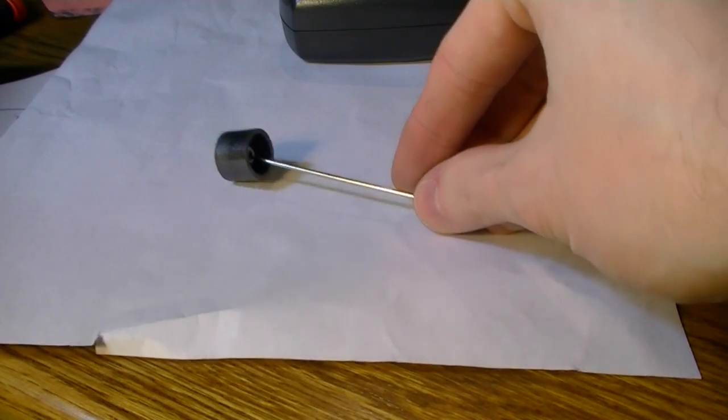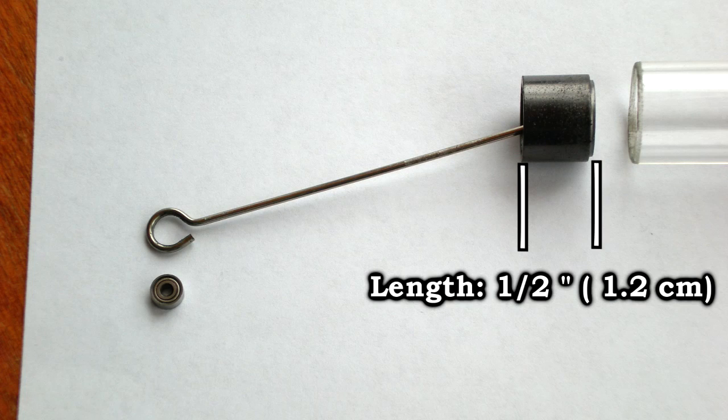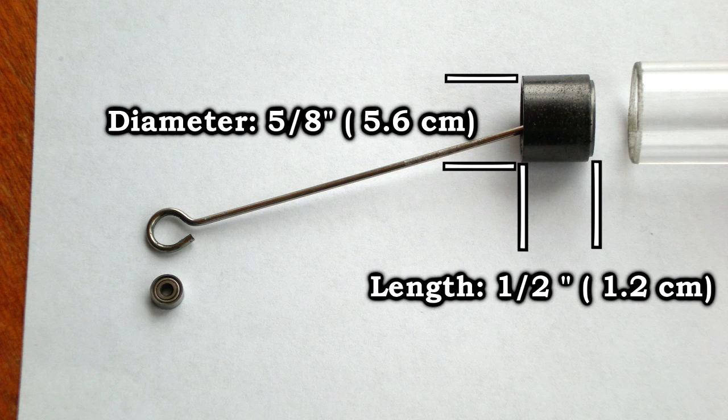Let's take a closer look at the graphite piston. The length of this piston is one half inch. The diameter is 5 eighths of an inch.